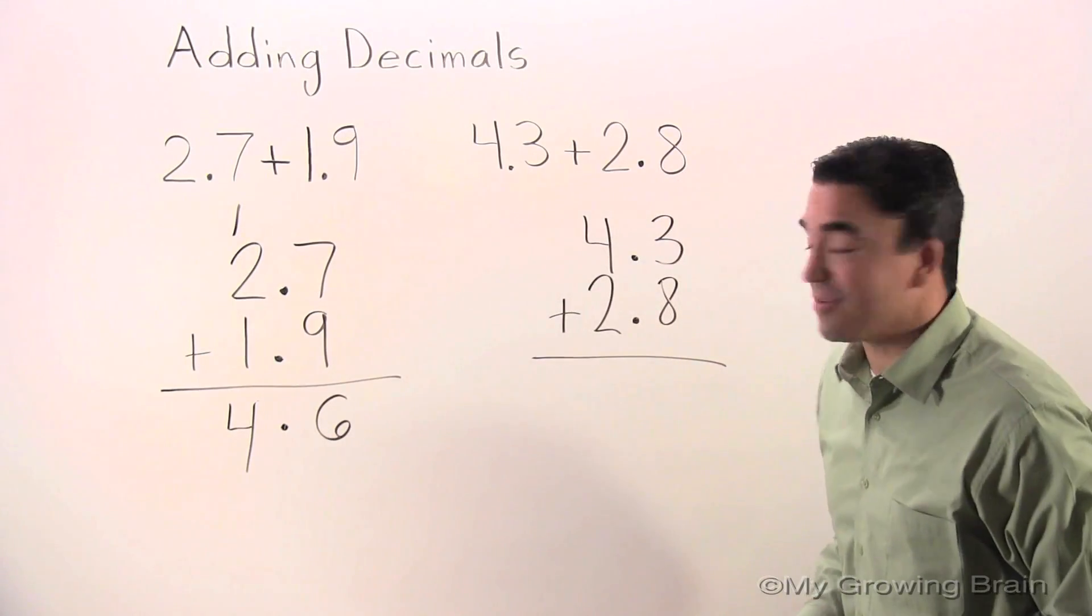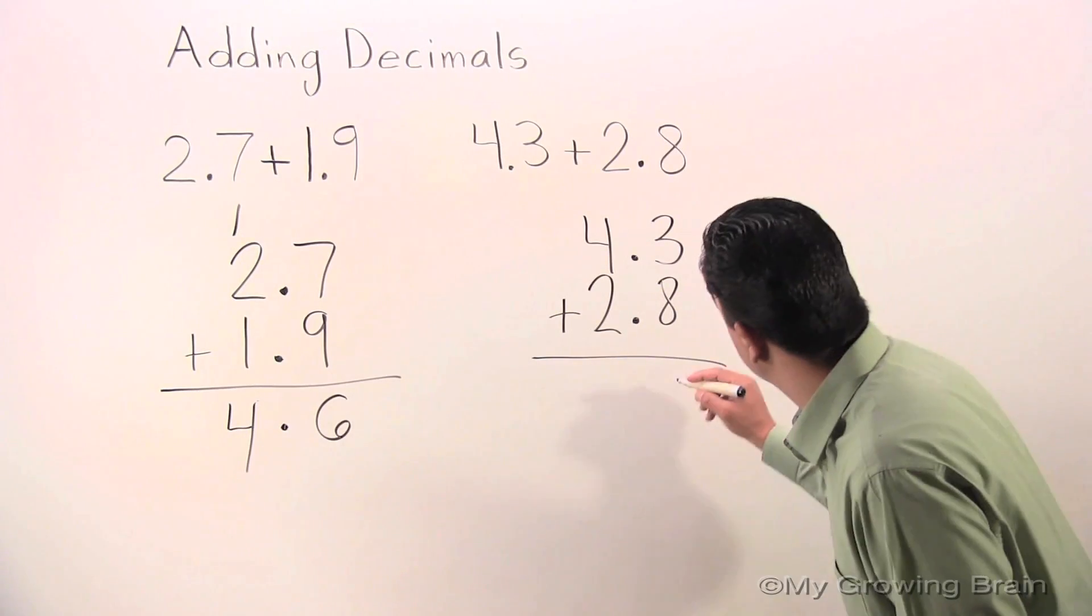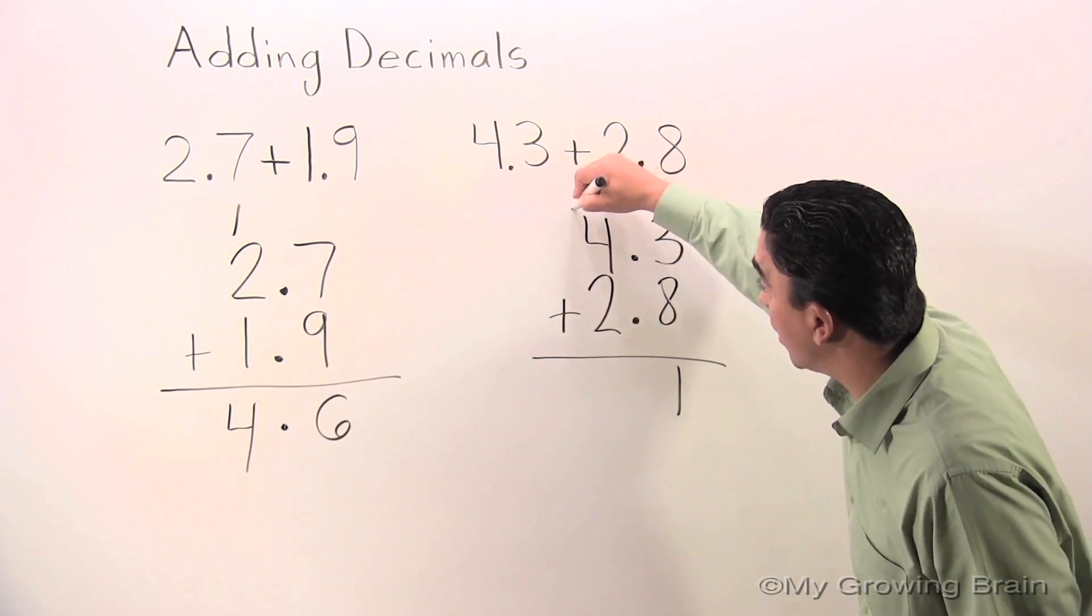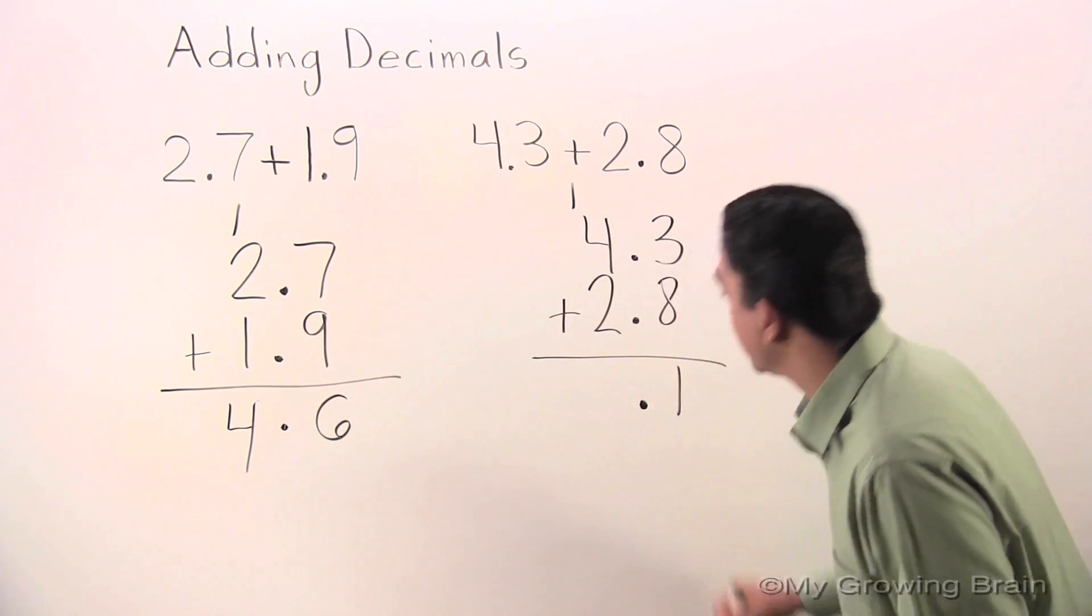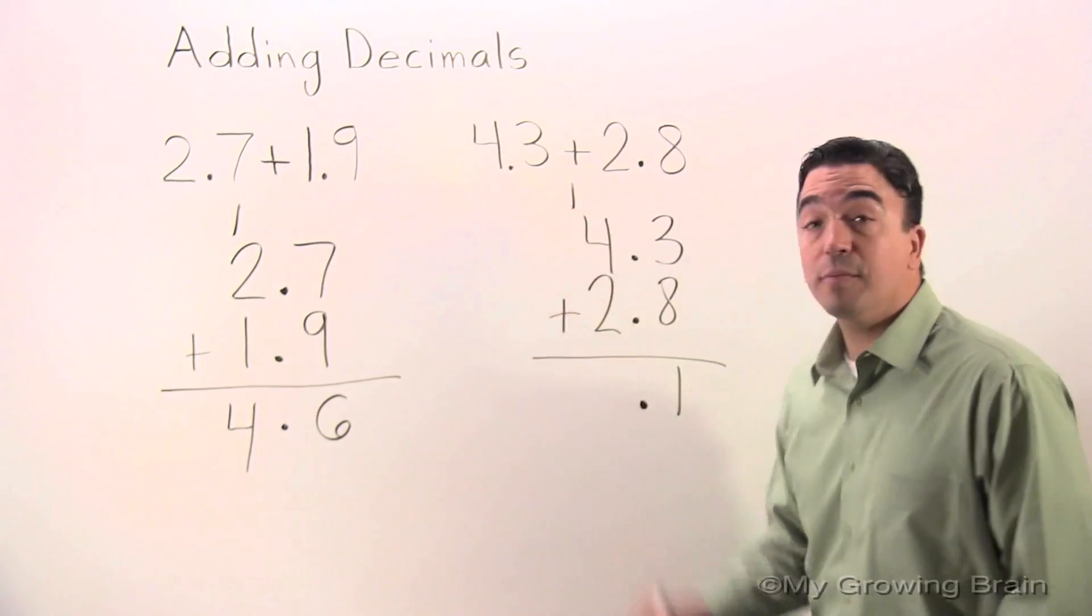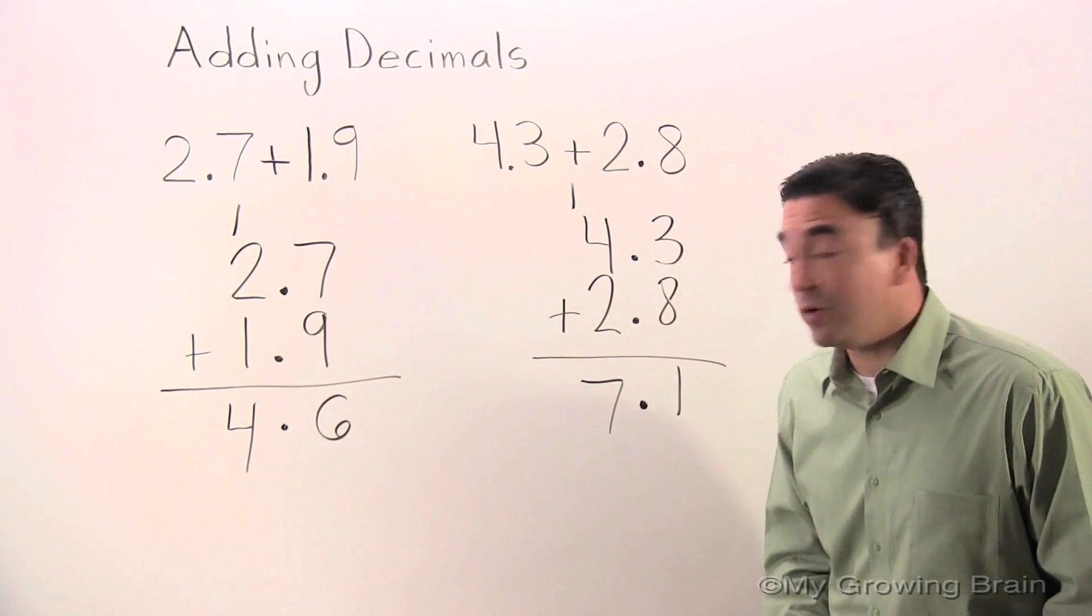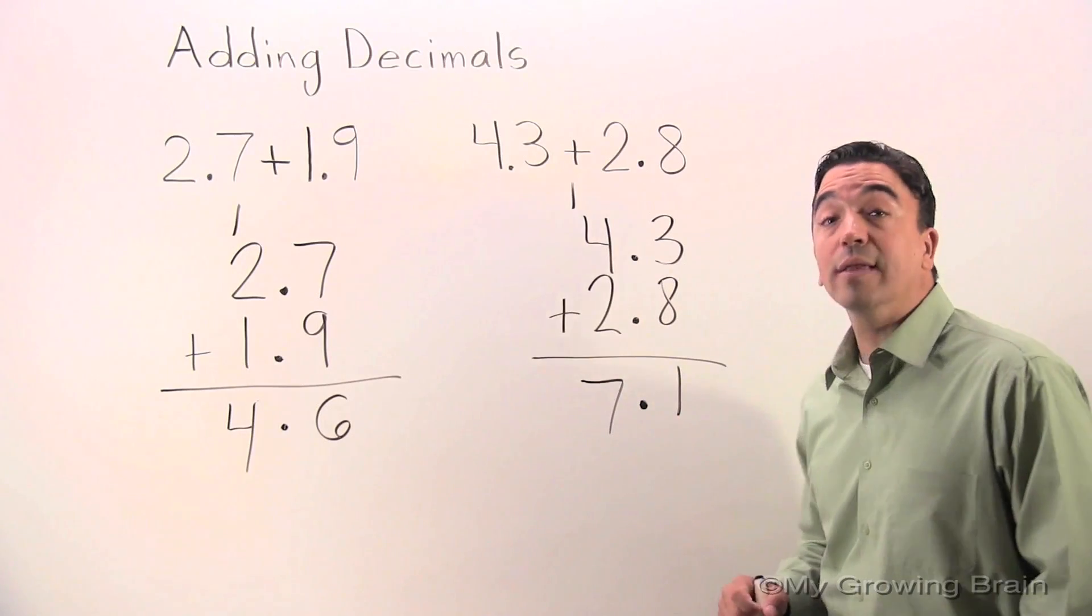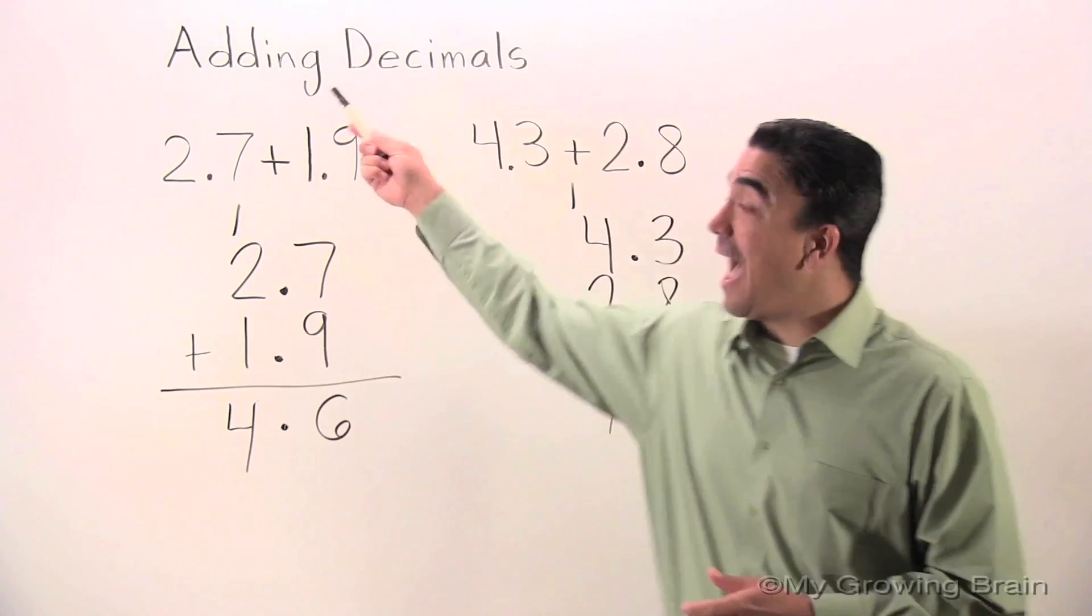Start with the tenths. 8 plus 3 is 11. Carry the 1 or regroup the 1 into the ones column. Drop the decimal. 2 plus 4 is 6. 6 plus 1 is 7. Our answer is 7.1 or 7 and 1 tenth. This concludes our lesson on adding decimals.